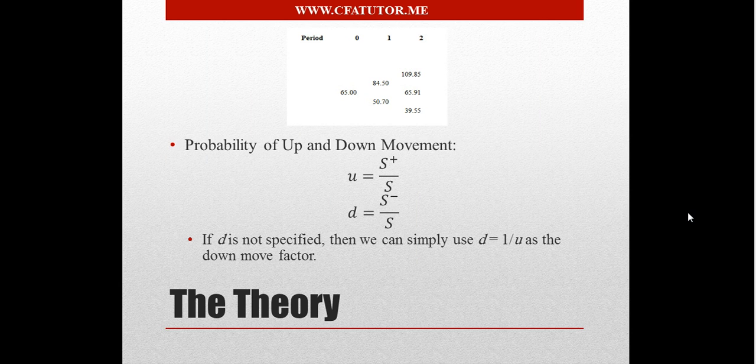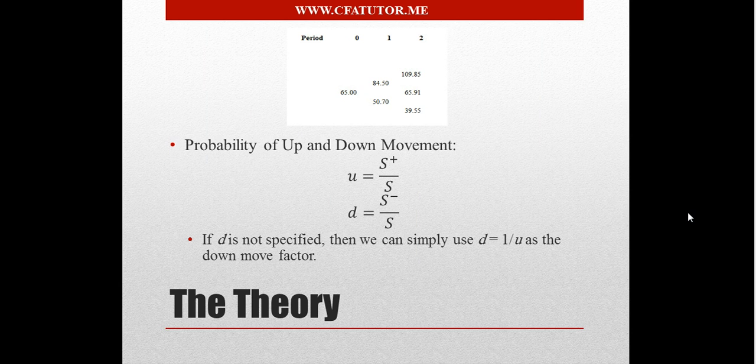The binomial model is one of the models that can be used to price options, and it's basically a simple model that assumes that there are two states of the world. So basically the stock price today in a period, and the period could be defined in whatever way the analyst defines it to be.